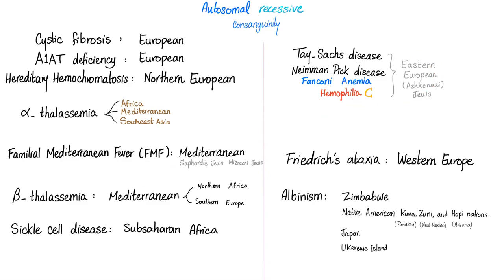You can't just lump all Jews together, because there are Jews in the United States, Canada, Australia, Europe, the Middle East, and Ethiopia — so you must be specific. Additional associations include: beta-thalassemia in Mediterranean, Northern Africa, and Southern Europe; sickle cell disease in Sub-Saharan Africa; Friedreich's ataxia in Western Europe; albinism in Zimbabwe, Native American nations, Japan. Note: this reflects current data and may change over time with migration and intermarriage patterns.